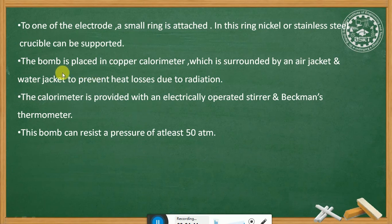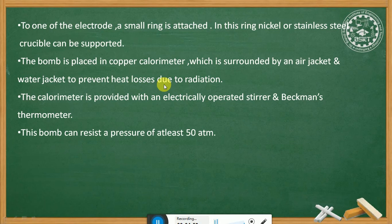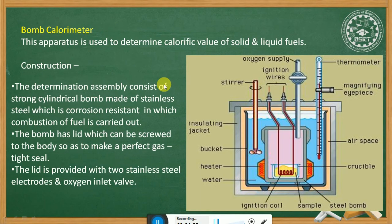The bomb is placed in a copper calorimeter, which is surrounded by an air jacket and a water jacket to prevent heat loss due to radiation. The surrounding medium helps prevent loss of heat.